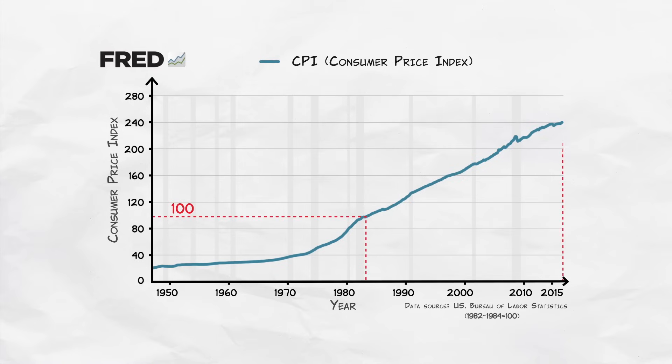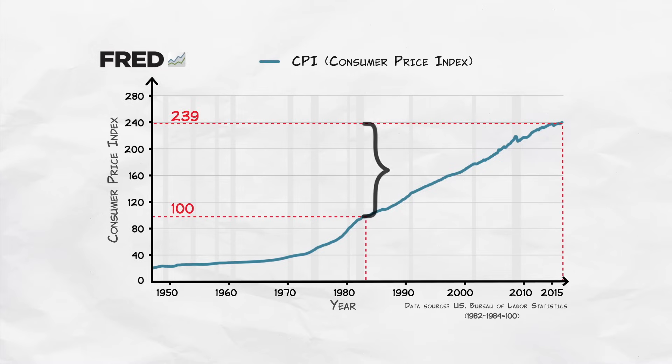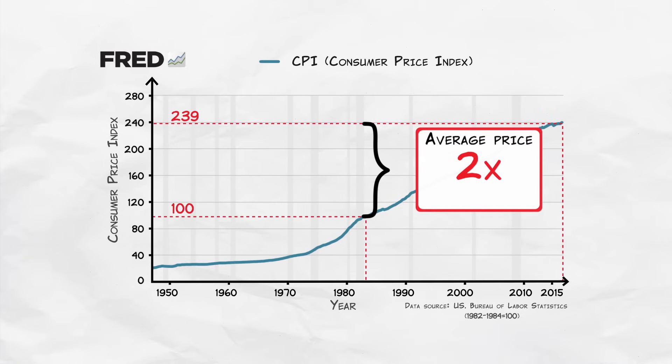In mid-2016, the index was 239, which means that over the past 33 years, prices on average have more than doubled. Now that doesn't mean that we're necessarily worse off today than in the past, because wages have also gone up over this time period — and in fact, wages have gone up on average by more than prices.